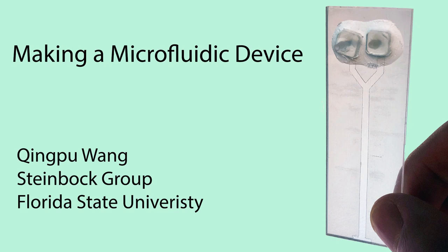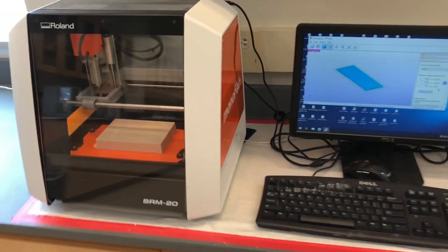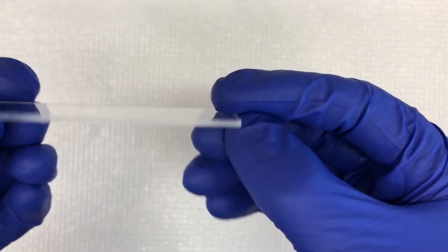This video will show you how to make a microfluidic device. First, we cut a rectangular plexiglass plate using a saw or a 3D milling machine.